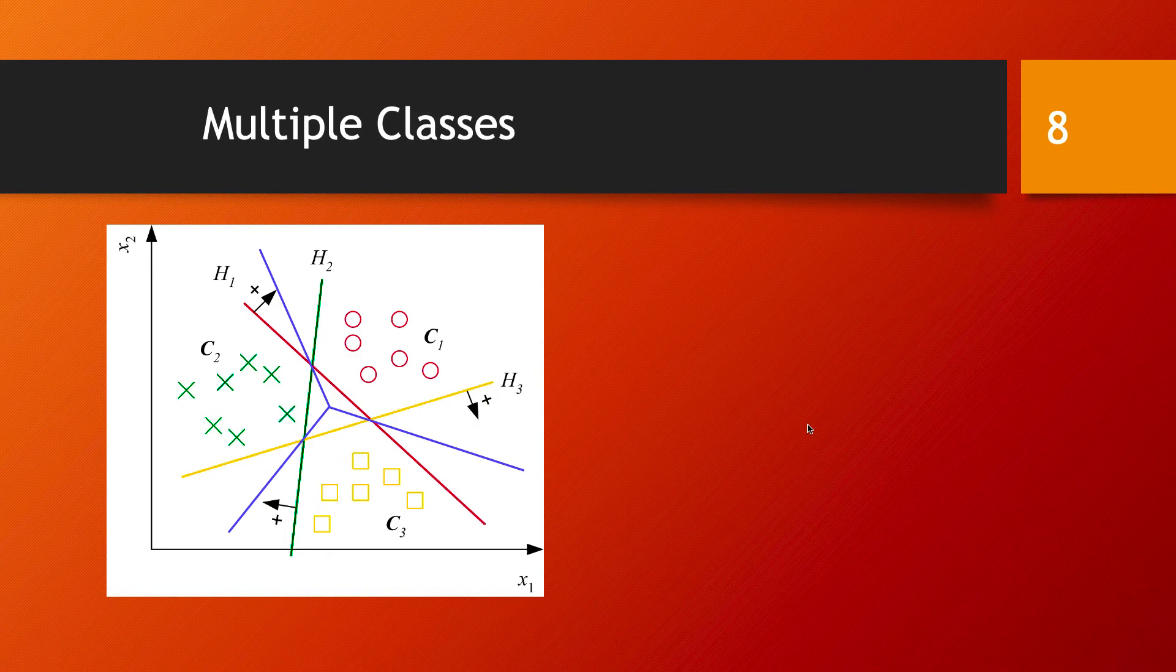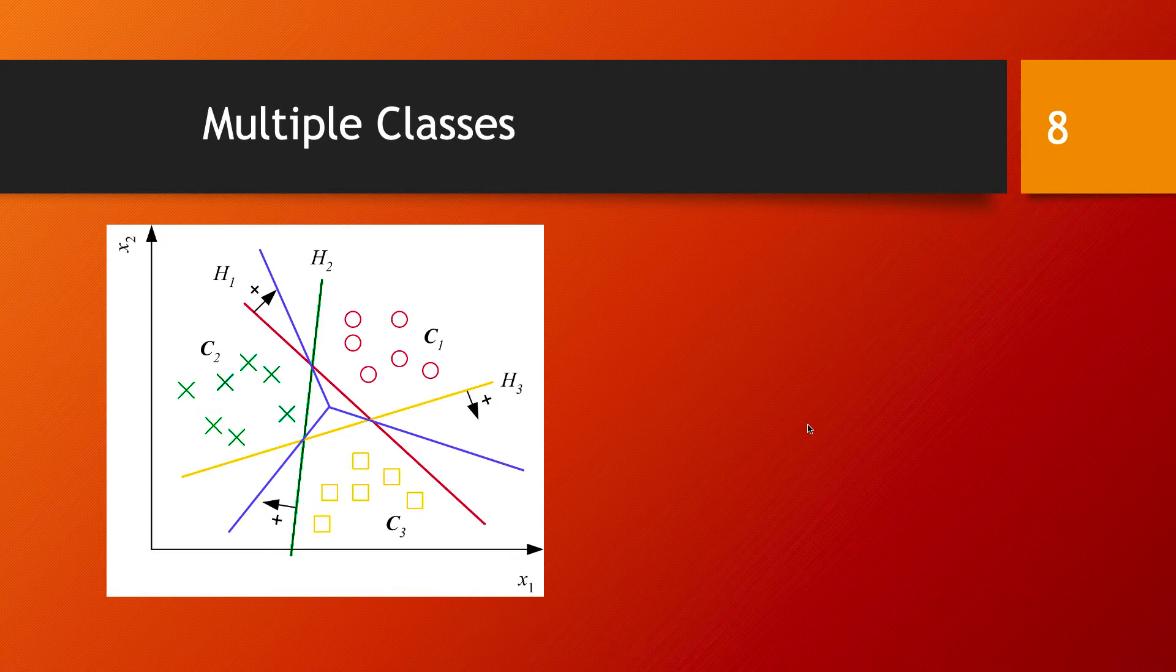When we do classification with linear discriminants, we are clearly assuming that we have linearly separable classes.